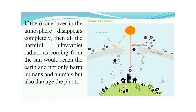The depiction on screen shows the effect of disappearance of the ozone layer. If the ozone layer in the atmosphere were to disappear completely, all the harmful ultraviolet radiations coming from the sun would reach the earth and not only harm hundreds of animals and plants, but also damage other structures.